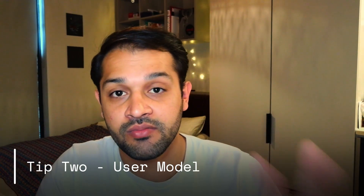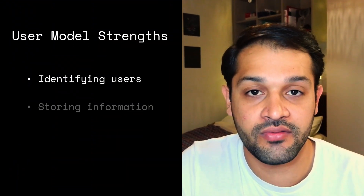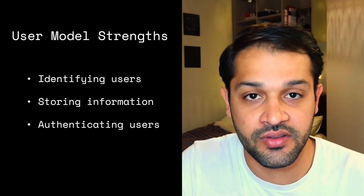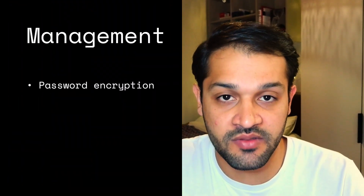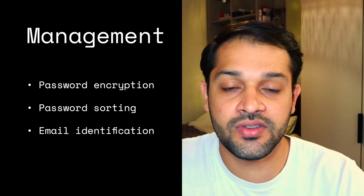Tip number two is the user model and extending the user model. Django comes with a built-in user model, and if you're building web applications you're more than likely going to need a way of identifying users, storing information about them, and authenticating them. The fact that it's already built into Django with a predefined schema, and manages things like encryption of passwords, storing of those passwords, and unique identification of emails, just saves you so much time.